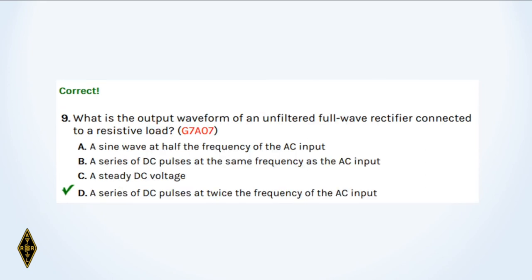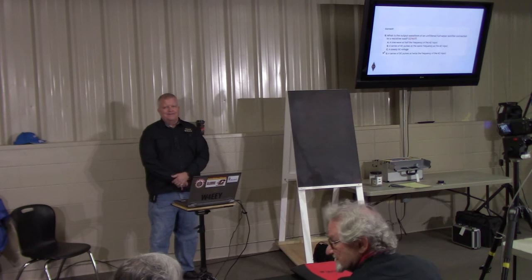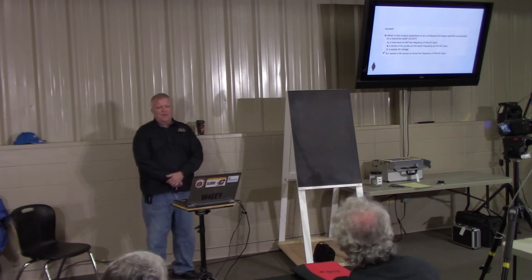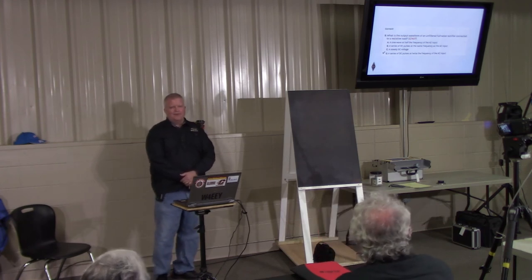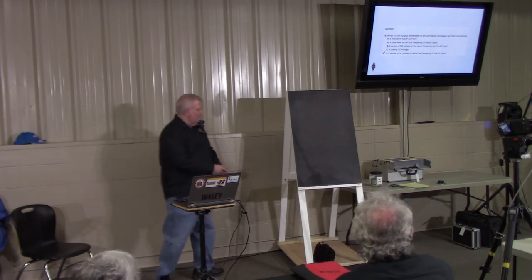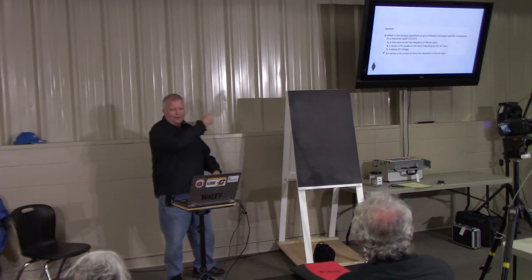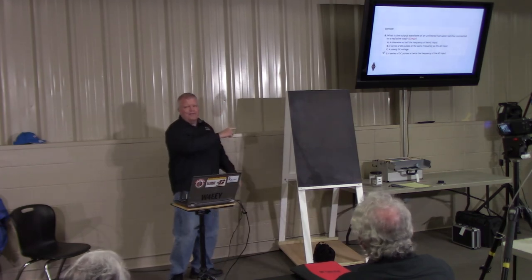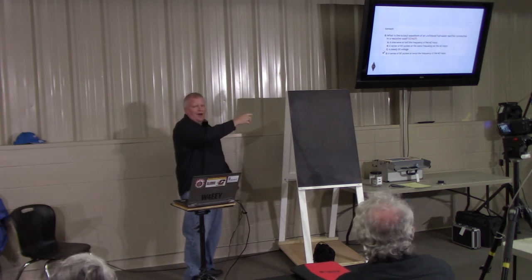And nine: What is the output waveform of an unfiltered full wave rectifier connected to a resistive load? It is a series of DC pulses at twice the frequency of the AC input. You've got the full sine wave and it flips one of them up, so the output repeats at twice the frequency.